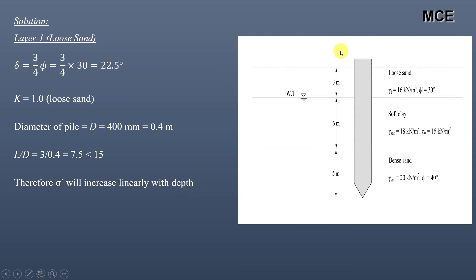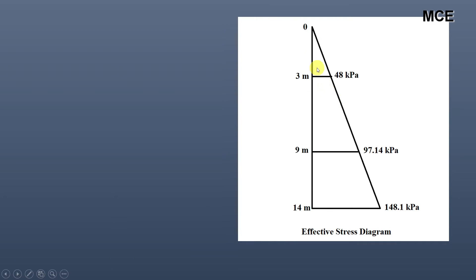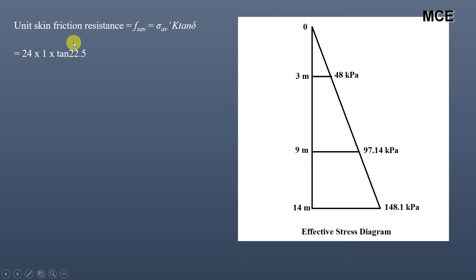The effective stress at the top of the loose sand layer is 0, and at the bottom it is 16 × 3 = 48 kPa. The average effective stress in this layer is 16 × 3 / 2 = 24 kPa. As shown in the effective stress diagram, at the ground surface it is 0, at 3 meters it is 48 kPa, at 9 meters it is 97.14 kPa, and at 14 meters it is 148.1 kPa. The unit skin friction resistance equals average effective stress × K × tan(delta) = 24 × 1 × tan(22.5°) = 9.9 kPa.